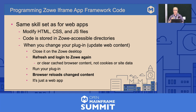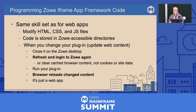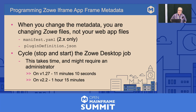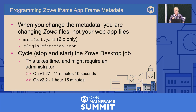The code must be stored in a directory that Zoe can access. When you change your web app to make improvements, just like any other web app, just refresh your Zoe desktop — you may have to log in again and the browser will reload your code. When you change the metadata — that's the manifest.yaml and the plugin definition.json file — you are changing Zoe files, not your web app. To do these updates, you will need to cycle the desktop app on all versions of Zoe. Stopping and starting it takes time, so you don't want to have to do it often.